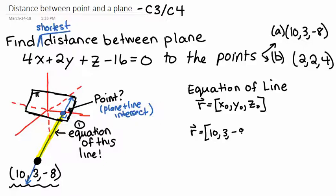So 10, 3, negative 8. Plus, then the next thing that's usually in an equation of a line is a direction vector here. So we need a direction vector for this line. And a great direction vector would be the normal vector to the plane. Because you know the normal vector to the plane is the perpendicular vector.